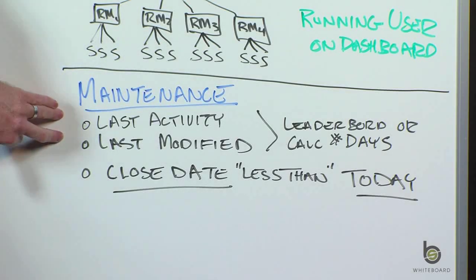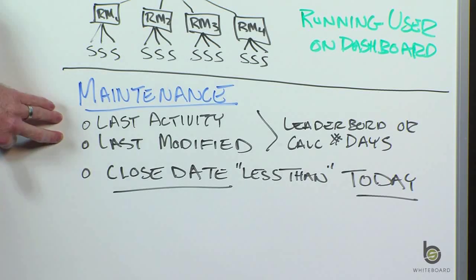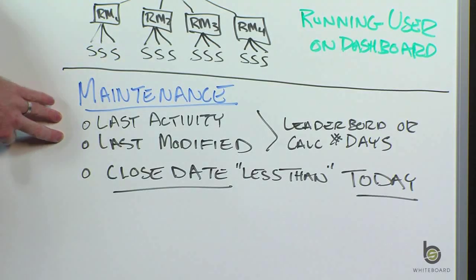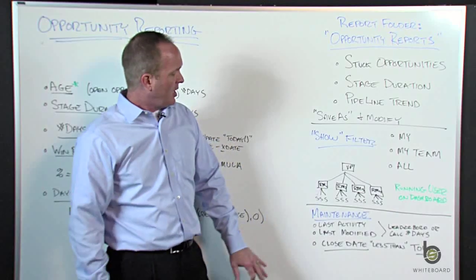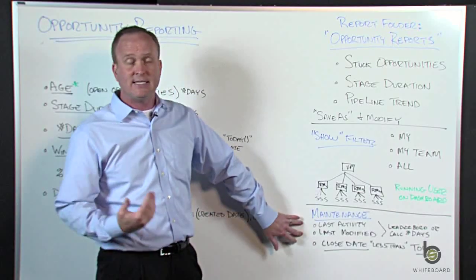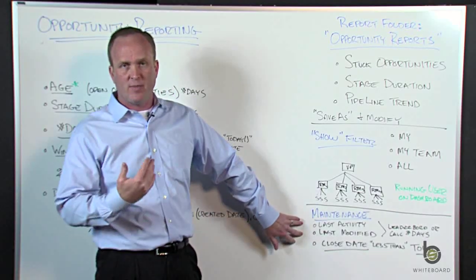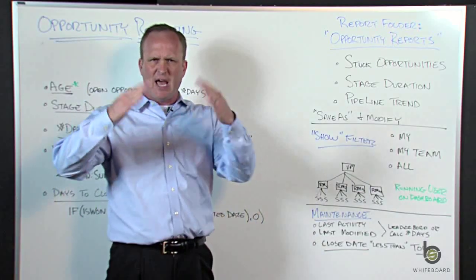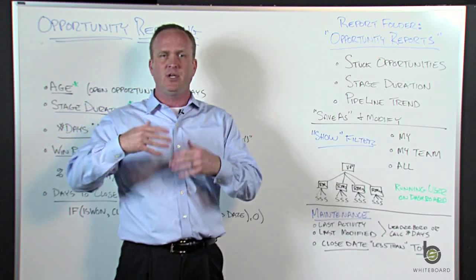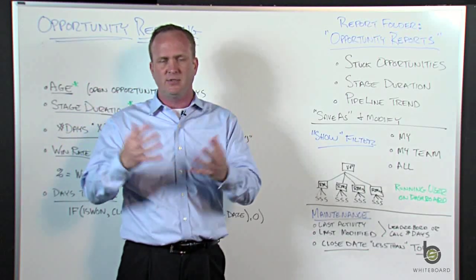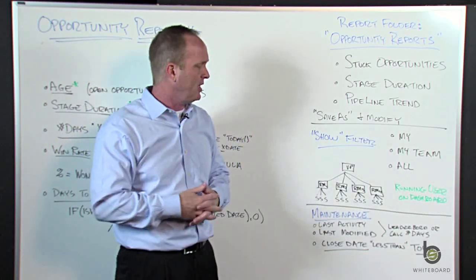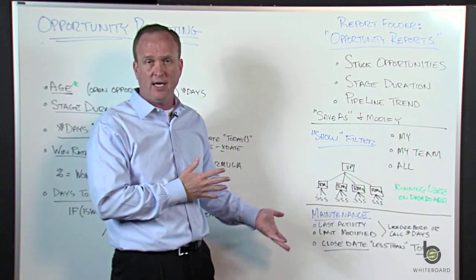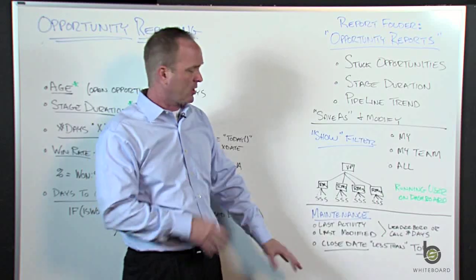Between those, you can run reports and filter — ask Salesforce to show all opportunities where the last modified date is greater than 90 days, or last activity within a certain amount of time. You can then stack rank oldest to newest by salesperson and let them know which ones they need to go back and work.